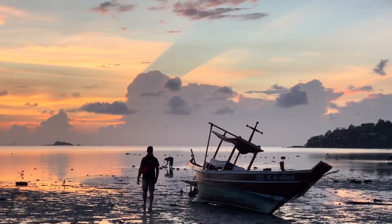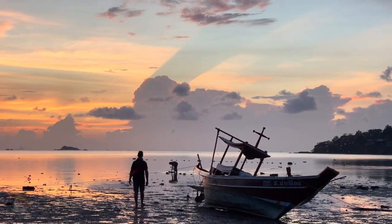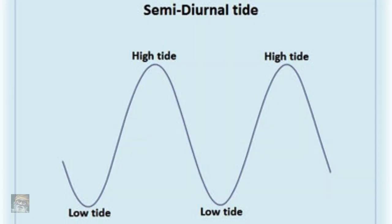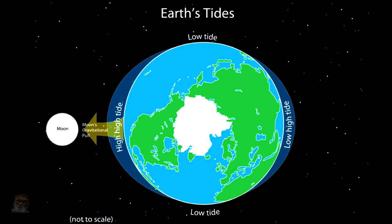The flow of water from high tide to low tide is called an ebb tide. Most tides are semi-diurnal, which means they take place twice a day. For example, when an area covered by the ocean faces the moon, the moon's gravitational force on the water causes a high high tide. As the earth rotates, that area moves away from the moon's influence and the tide ebbs.